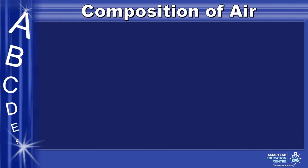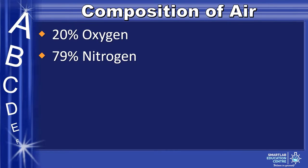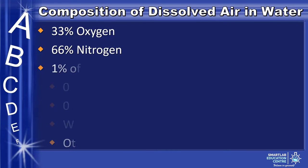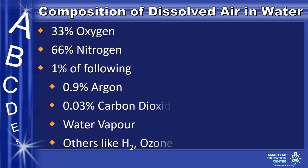The composition of air is made up of 20% oxygen as well as 79% nitrogen. Whereas the composition of dissolved air in water is made up of 33% oxygen, 66% nitrogen, and argon, carbon dioxide, water vapor, and the others listed make up the final last 1%.